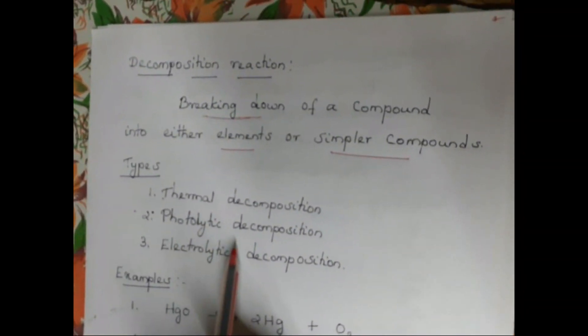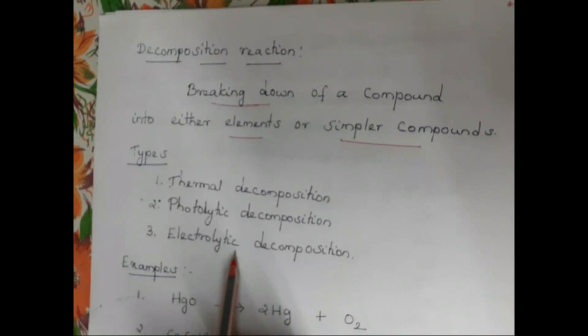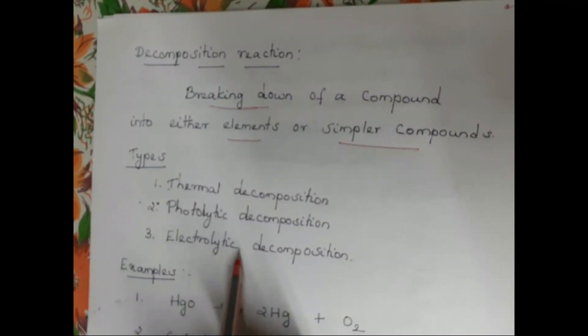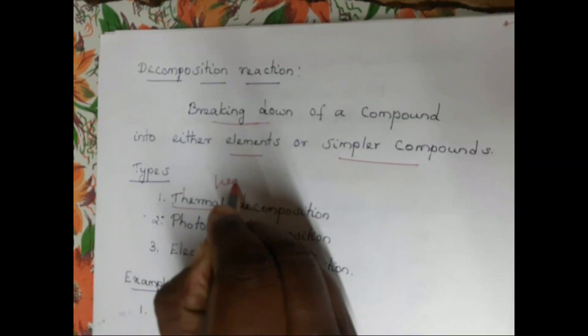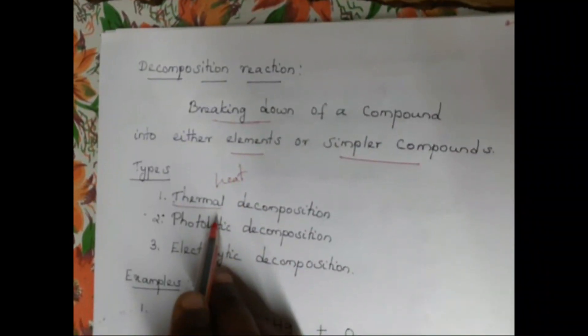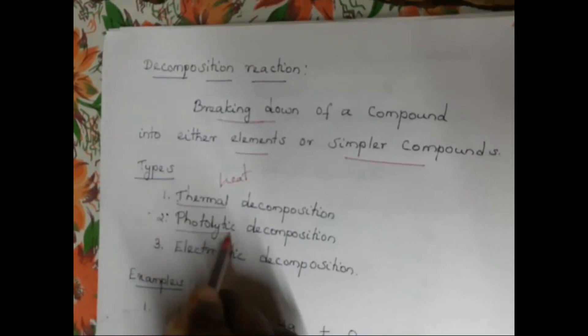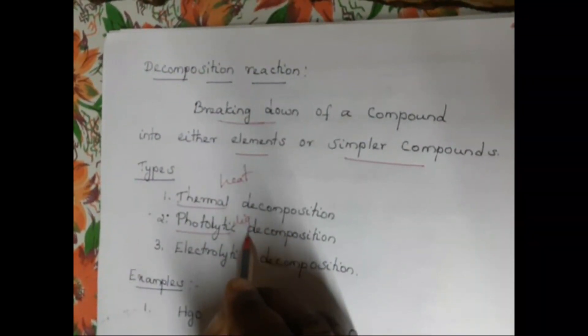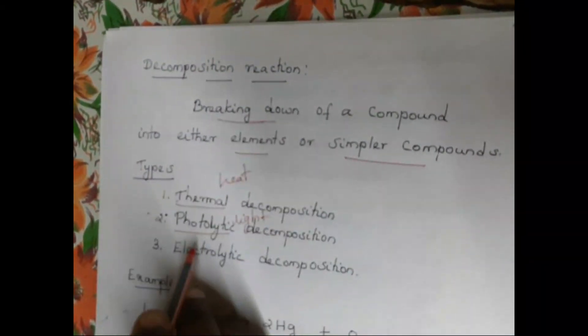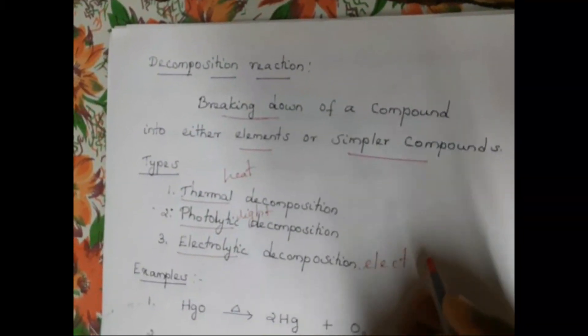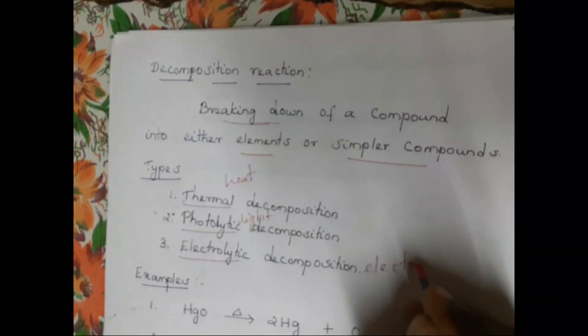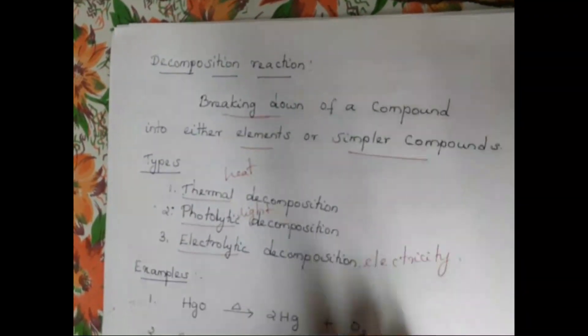Let us see the types of decomposition reaction. They are thermal decomposition, photolytic decomposition, and electrolytic decomposition. If you are using heat for breaking down a compound, it is called thermal decomposition. If you use light, it is called photolytic decomposition. If you use electricity, it is called electrolytic decomposition.